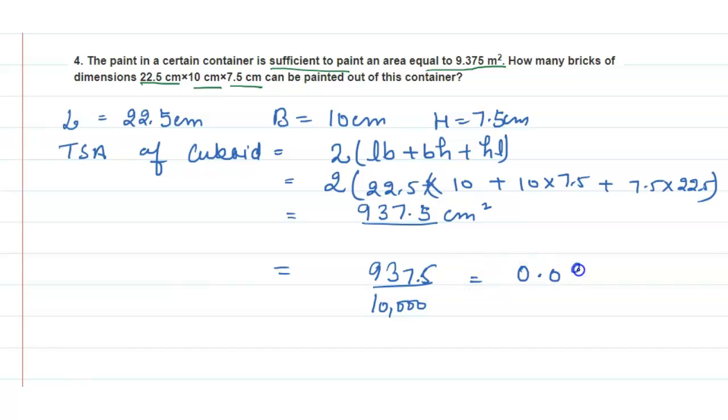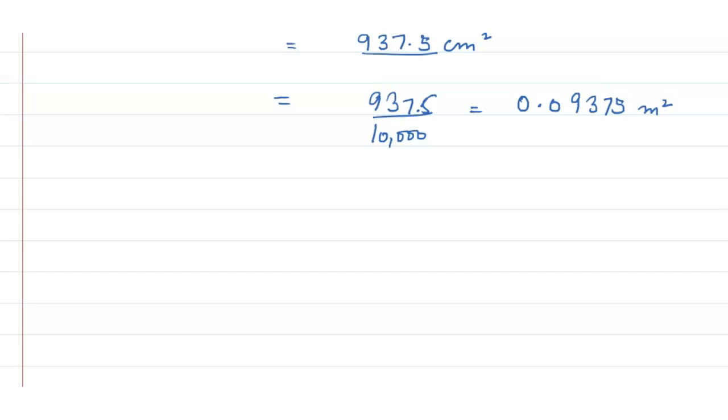Now let the number of bricks is n. So n number of bricks multiplied with the area of the one brick is equal to the total required area of paint, which is 9.375.